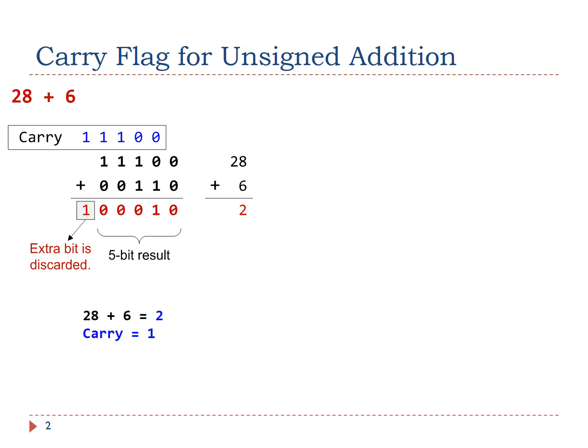An example is: what happens if one were to add 28 and 6 using 5-bit registers? The result should be 34, which is 100010 in binary, requiring 6 bits to represent.